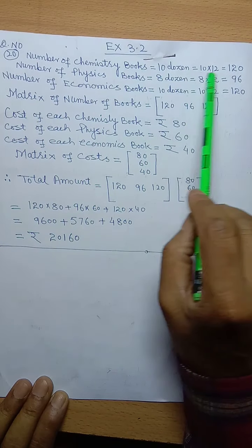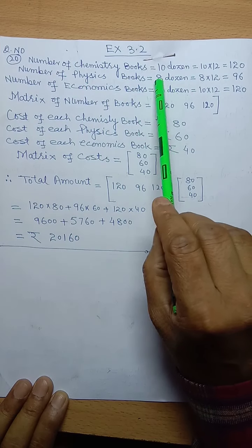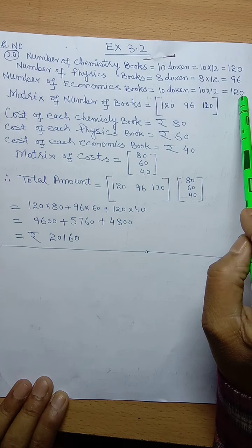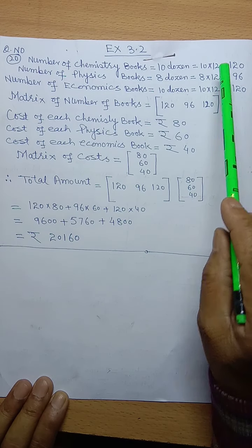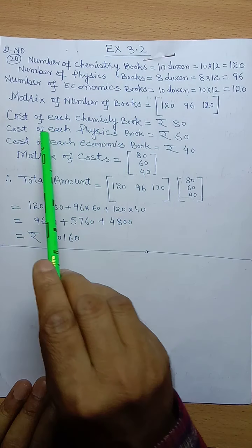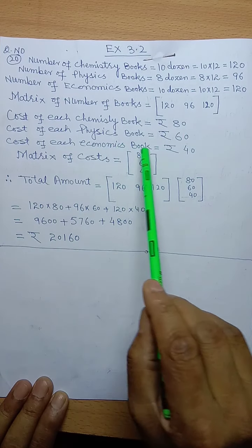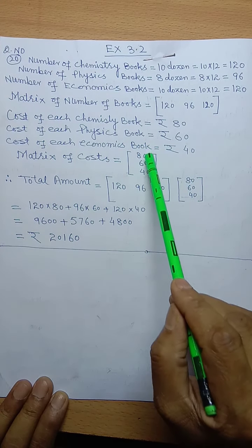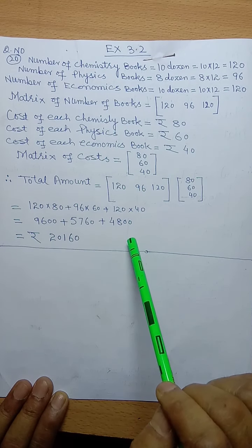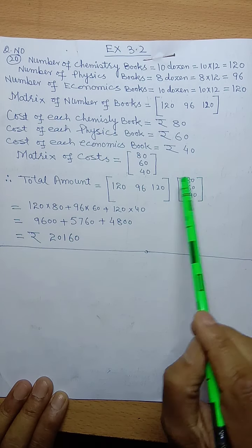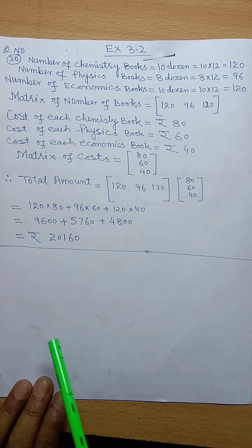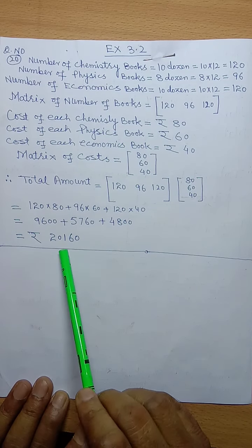Number of chemistry books: 10,000 equivalent to 120; number of physics books: 8,000 equivalent to 96; number of economics books: 10,000 equivalent to 120, because number of books in 1,000 equals 12. Matrix of number of books is [120, 96, 120] and matrix of cost is [80; 60; 40] — cost of chemistry book rupees 80, physics rupees 60, economics rupees 40. Total amount equals 120 into 80 plus 96 into 60 plus 120 into 40.